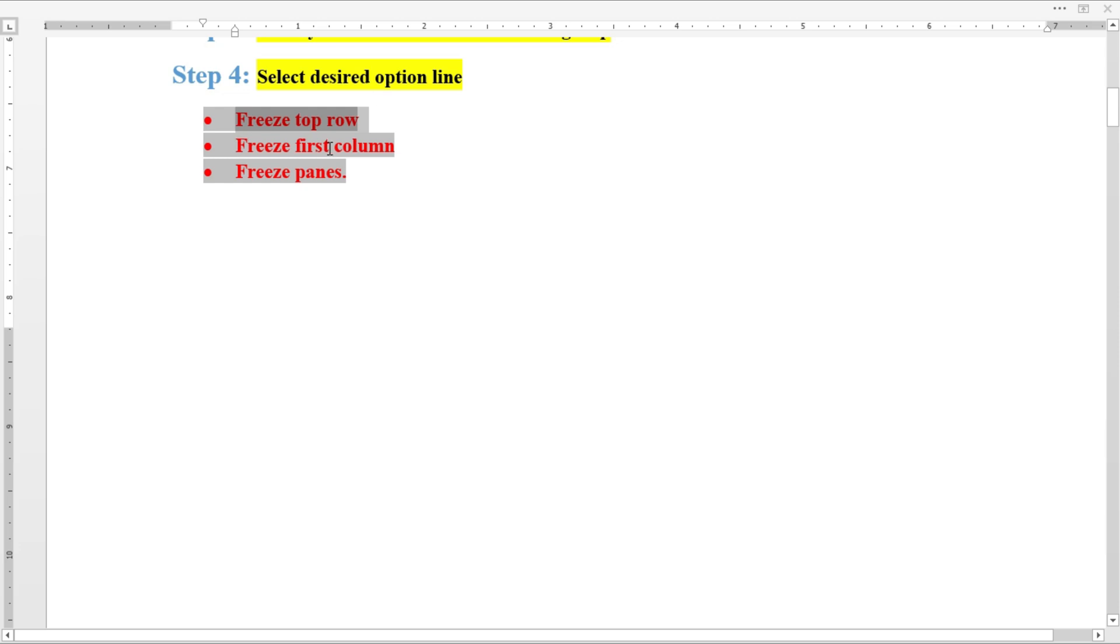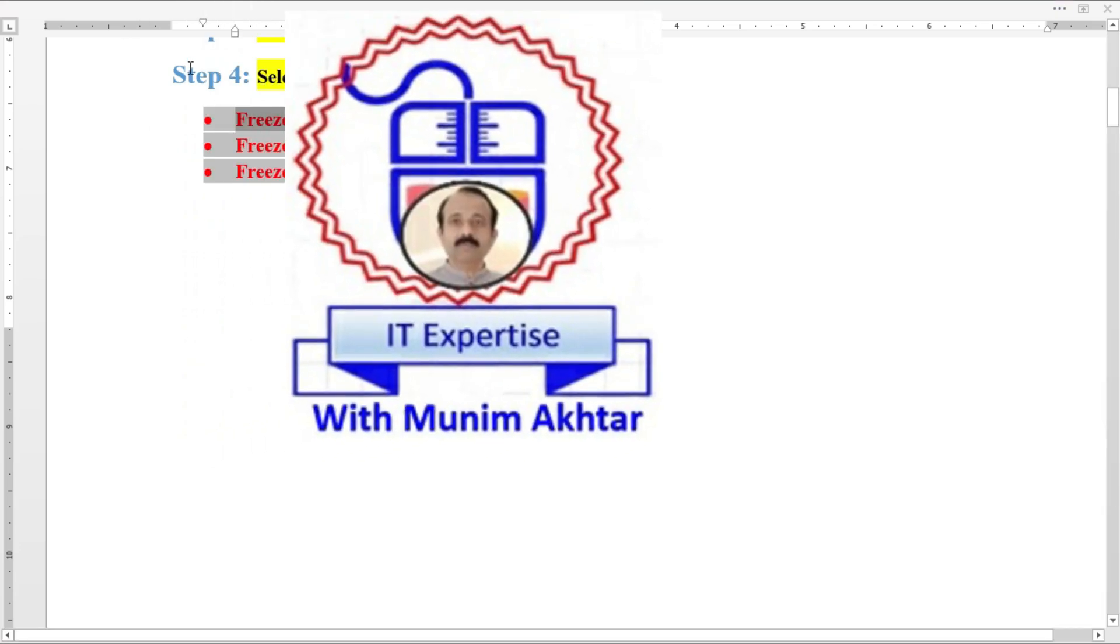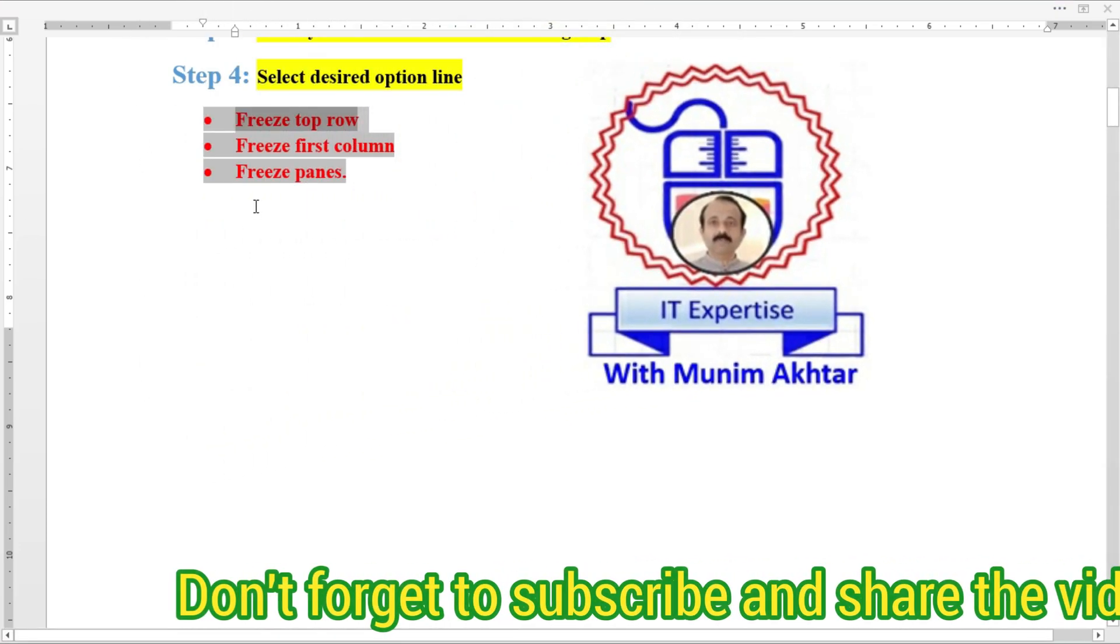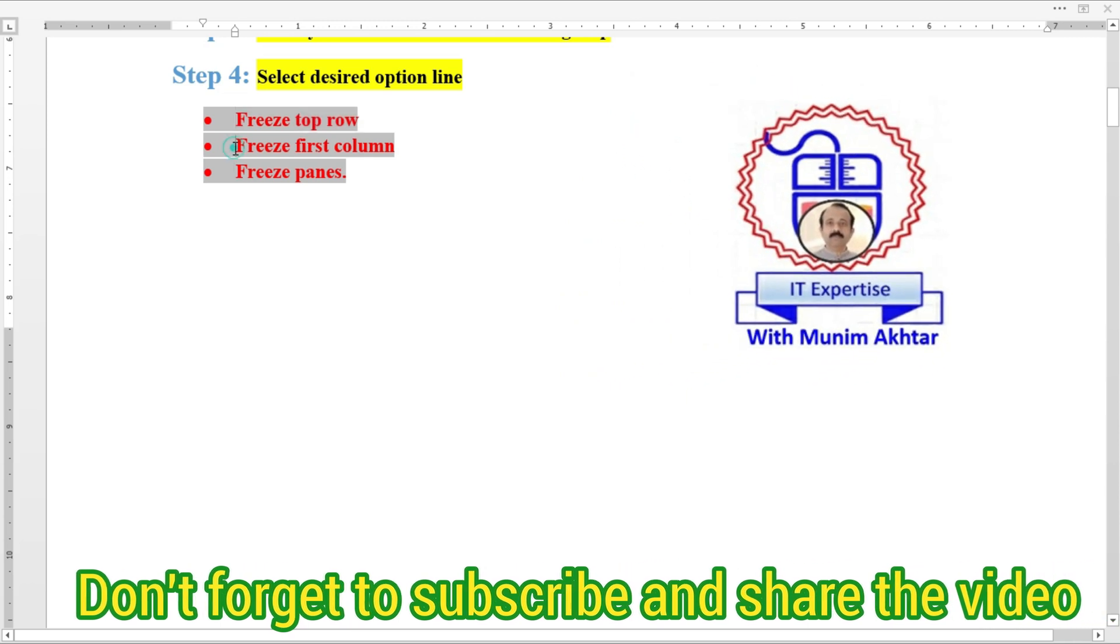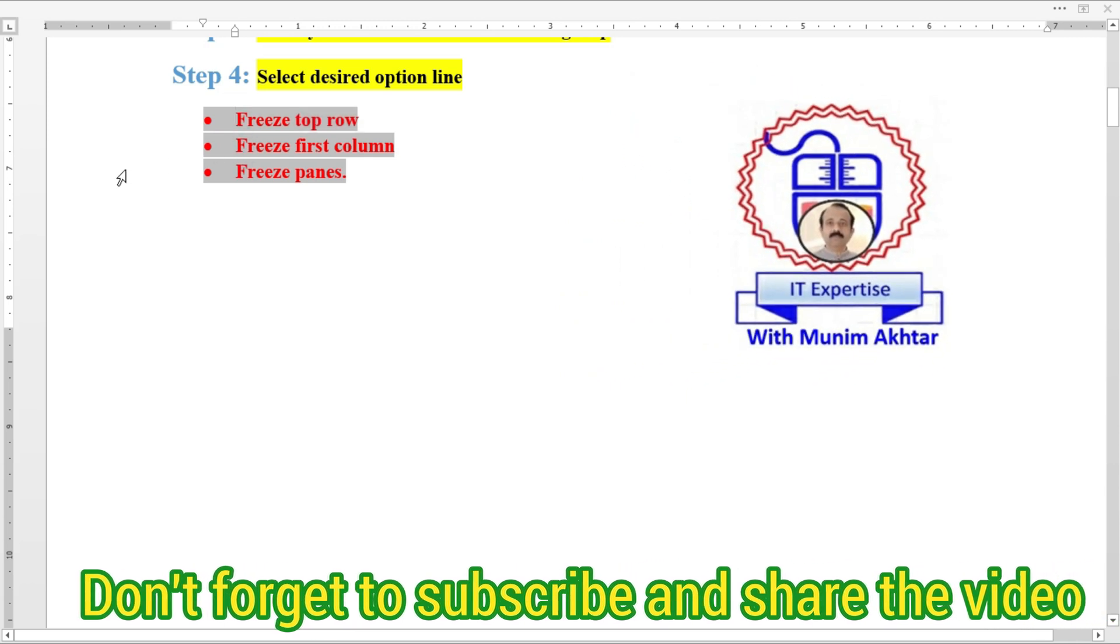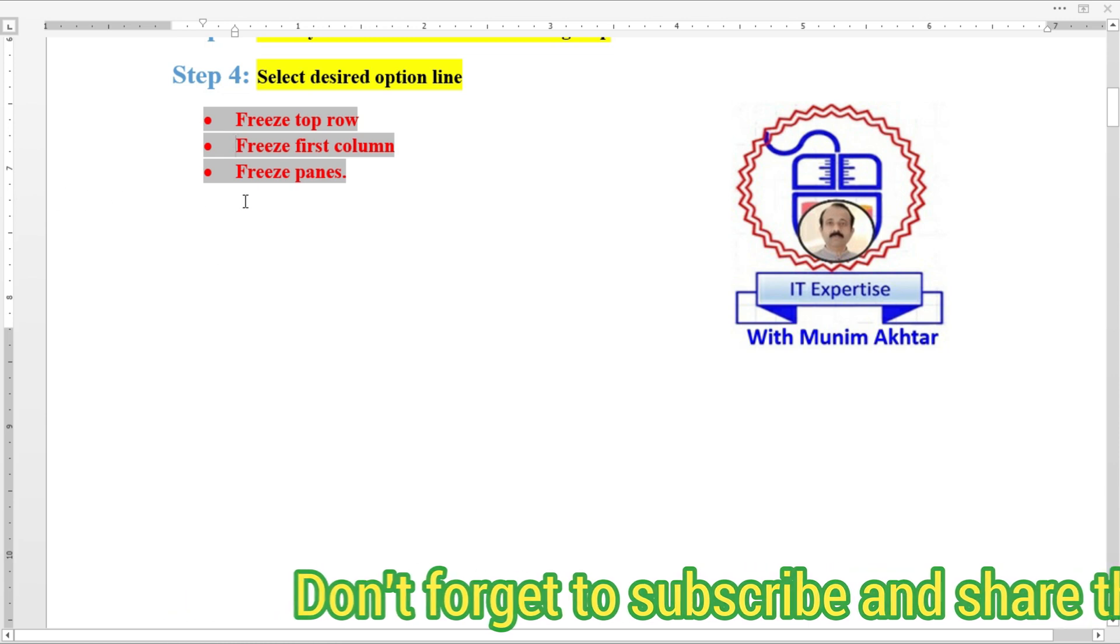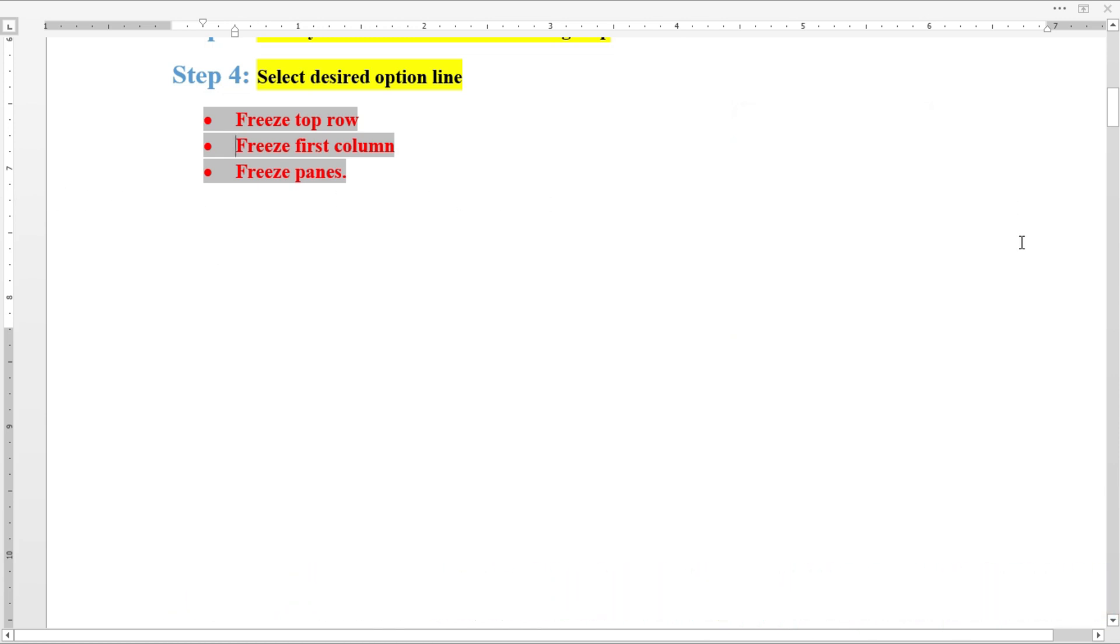Next step is Freeze First Column. On the left side you can see the first column, and on the right side there are other columns and rows. You can freeze the first column if you want.